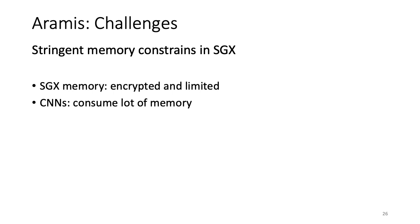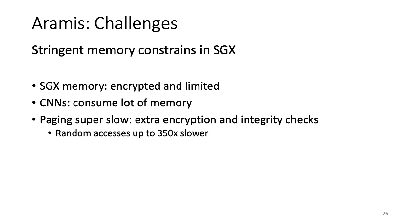There are several challenges that we faced while using SGX to run our benchmarks. Due to time constraints, I will only be able to talk about one major challenge that comes because of the stringent memory constraints in SGX. Please refer to our paper for the rest. The memory that is specifically dedicated to SGX is encrypted and very limited. We know that CNNs like ResNet50 consume a lot of memory when run securely. Although paging is available as an option, it is super slow because of the extra encryption and integrity checks that are performed every time this happens. In fact, randomly accessing memory in SGX can be up to 350 times slower than doing it outside SGX.